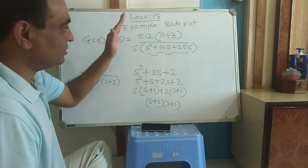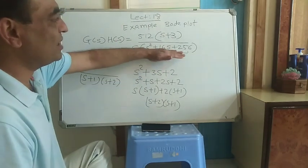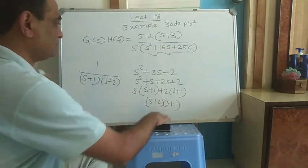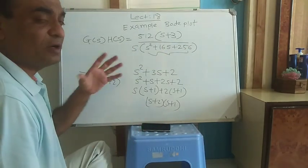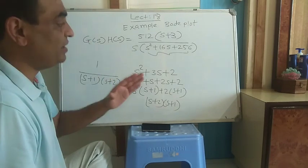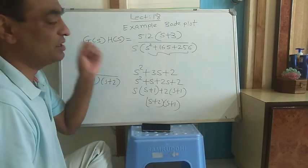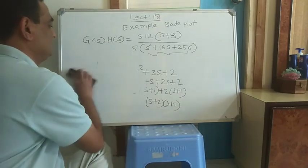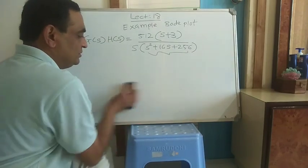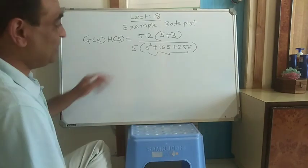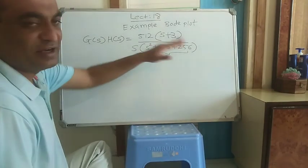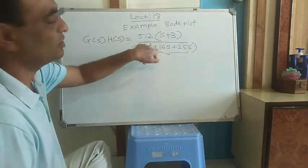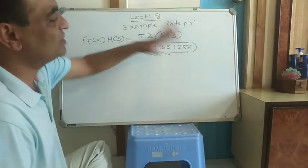Before starting any sketching, you need to analyze the second-order terms. A second-order term is only valid when the roots are in complex conjugate form. People commonly make a mistake here — they straight away consider it as a second-order term. In our example, the roots are complex conjugate, so it is indeed a second-order term.